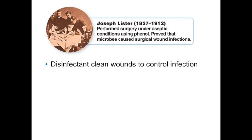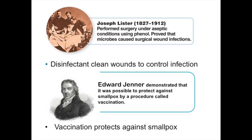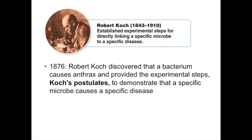Joseph Lister introduced the use of a disinfectant to clean wounds in order to control infection. Another milestone occurred when Edward Jenner demonstrated that it was possible to protect against smallpox by a procedure called vaccination. Robert Koch established a sequence of experimental steps for directly relating a specific microbe to a specific disease. These steps are known as Koch's postulates.